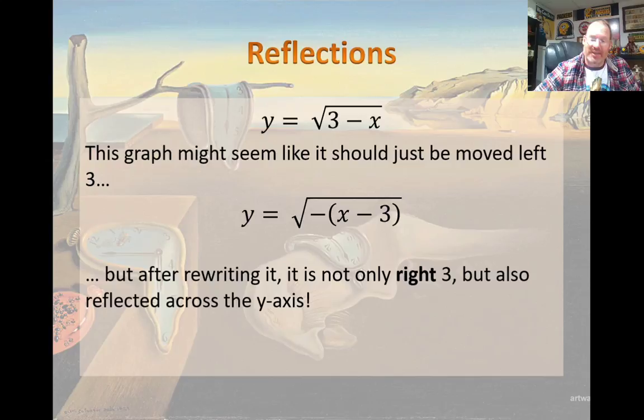The negative on that x is going to tell you that there's a reflection across the y-axis. But if you don't rearrange it, it's going to have you go the wrong direction for the horizontal transformation.